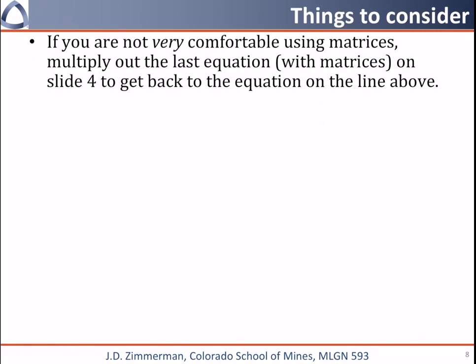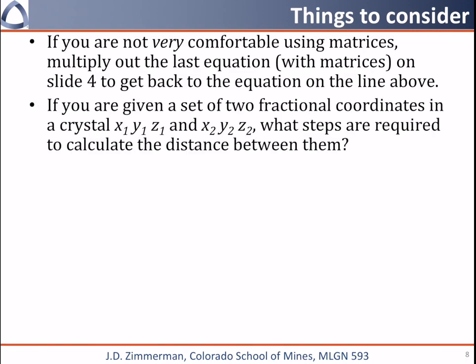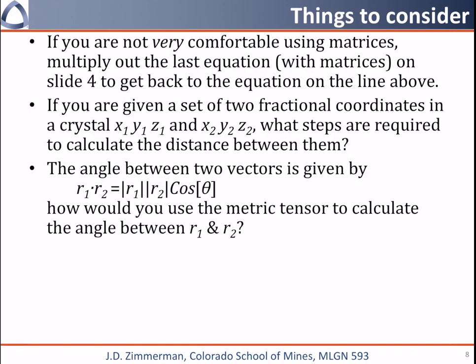I have a few things I'd like you to consider. First, if you're not very comfortable using matrices, I want you to multiply out the last equation on slide 4 and see if you can get back to the equation on the line above it. Second, if you are given a set of two fractional coordinates in a crystal, x1, y1, and z1, and x2, y2, z2, what steps would be required to calculate the distance between them? Third, the angle between two vectors is given by r1 dot r2 is equal to the magnitude of r1 times the magnitude of r2 times the cosine of the angle between them. So how would you use the metric tensor to calculate the angle between r1 and r2?